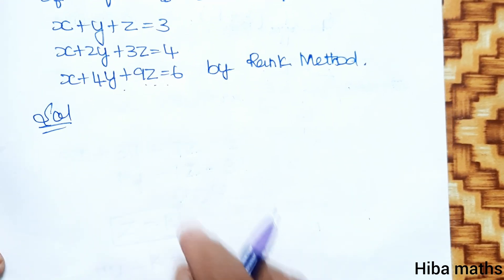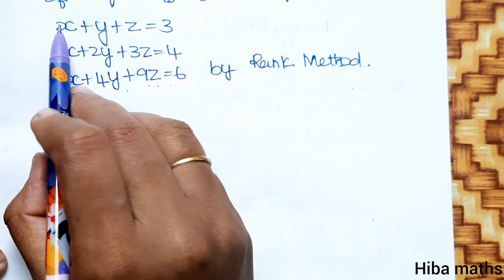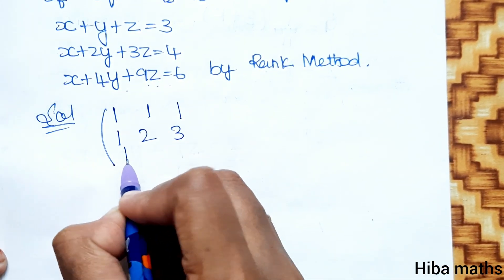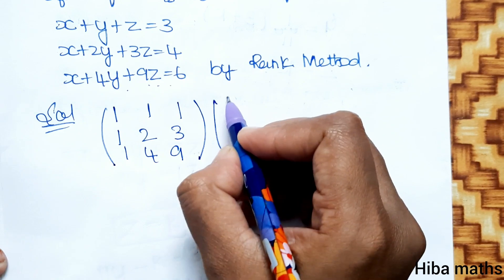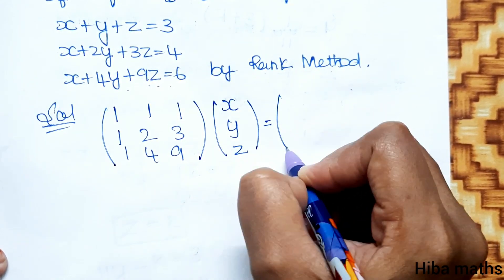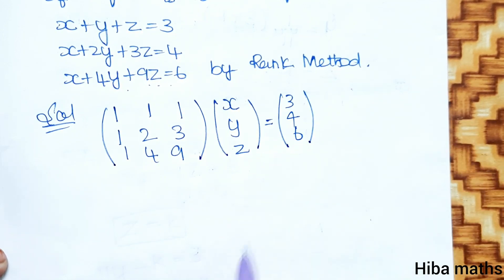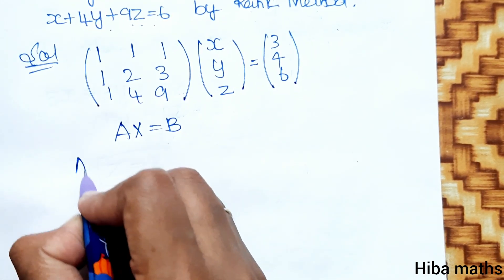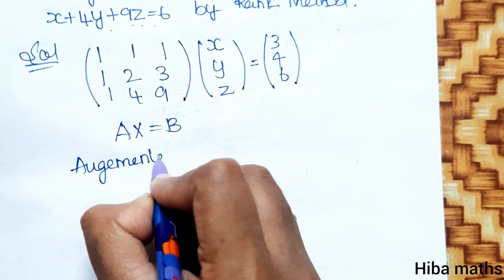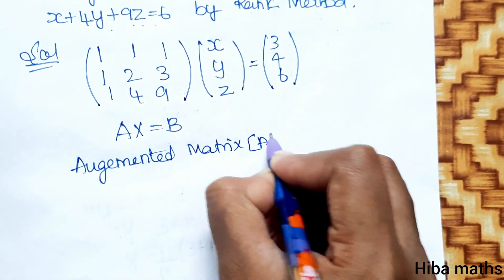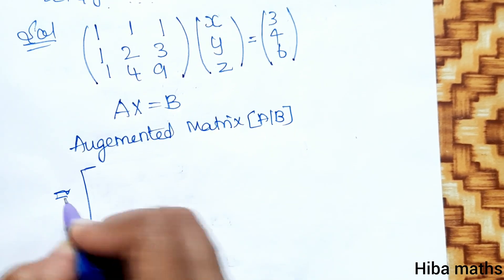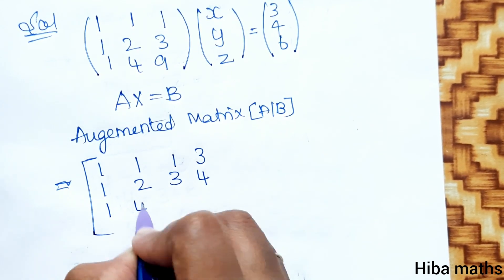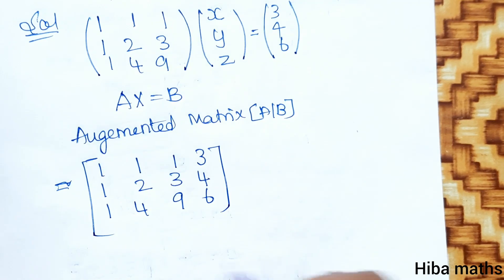We write the system in matrix form. The coefficient matrix has x, y, z columns with entries 1,1,1 / 1,2,3 / 1,4,9. We form the augmented matrix [A|B], which is Ax = b. So the augmented matrix a-bar is: 1,1,1,3 / 1,2,3,4 / 1,4,9,6.